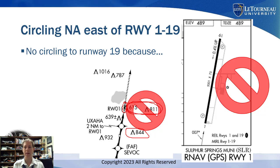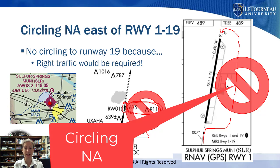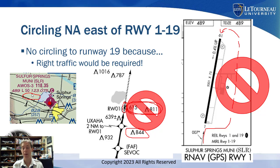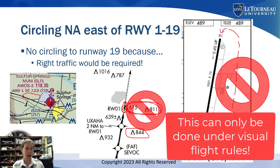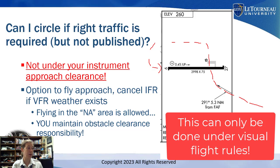Here's the crazy part: you cannot even circle to runway 119 on this RNAV to runway 1, because right-hand traffic would be required. So I would have to enter a left downwind, which puts me in the area that is not authorized. Looking at Sulphur Springs, there's nothing published about making right traffic for runway 19. So the only way to land on that runway from that approach would be to fly the approach, cancel your instrument flight plan, change over to visual flight rules — and then you could fly in that not-authorized area, but you maintain the obstacle clearance responsibility.